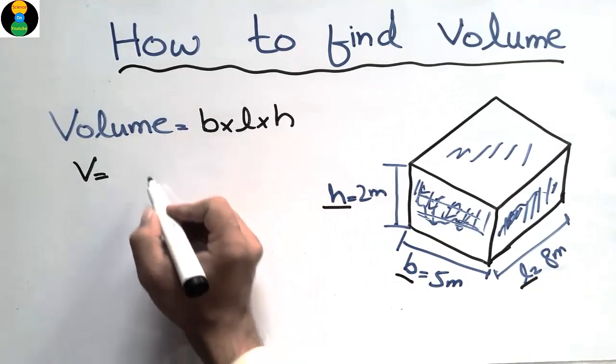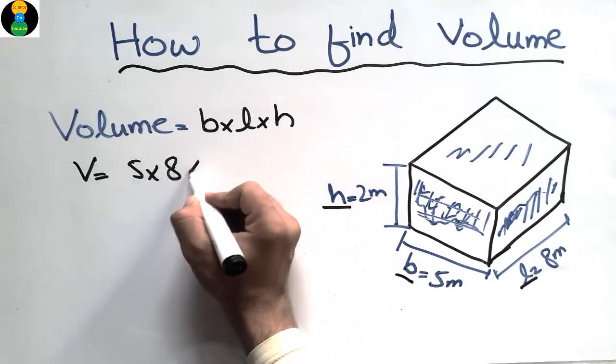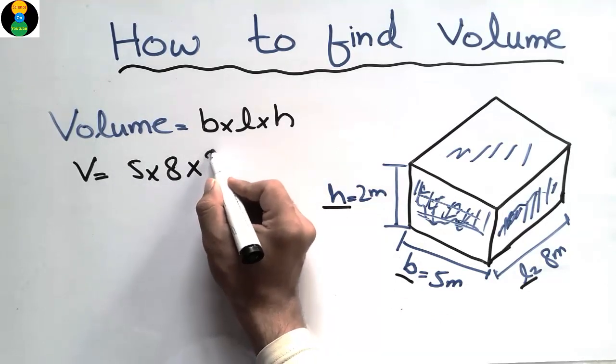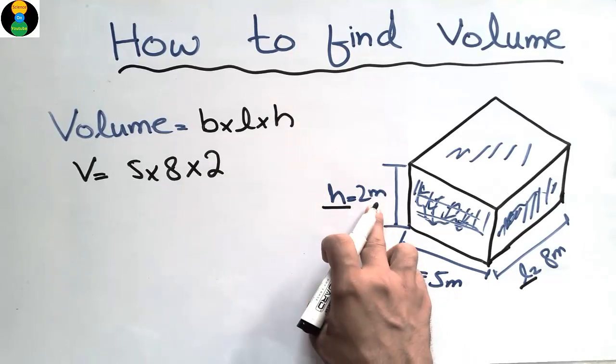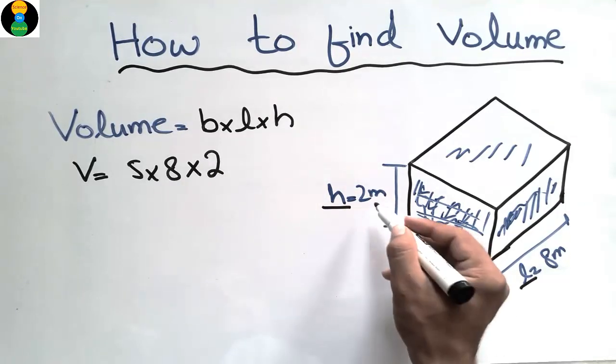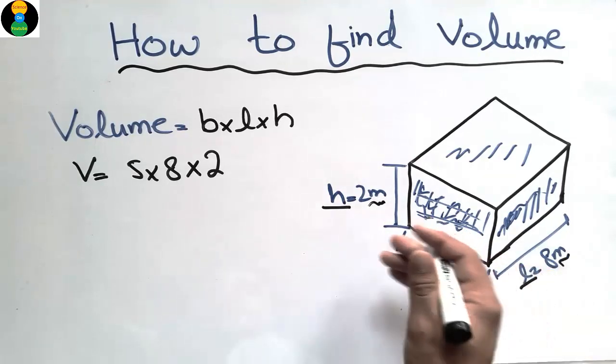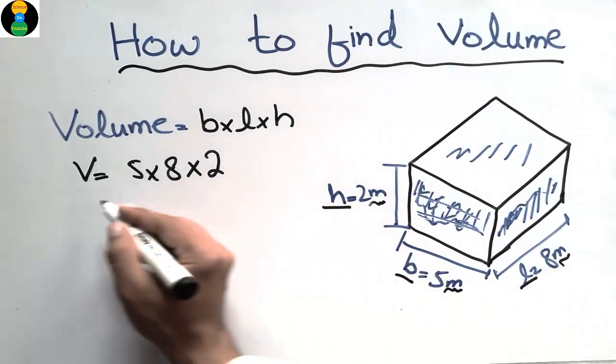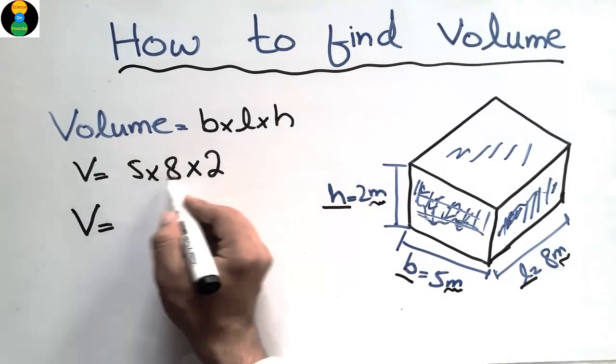For example, the 5 meters is the width, 8 meters is the length, and 2 meters is the height. All these units should be in one format. For example, we use meters, so all units should be in meters. If we use feet, so all units should be in feet.